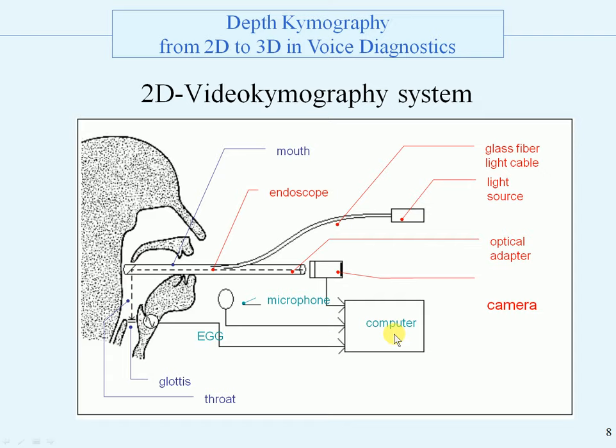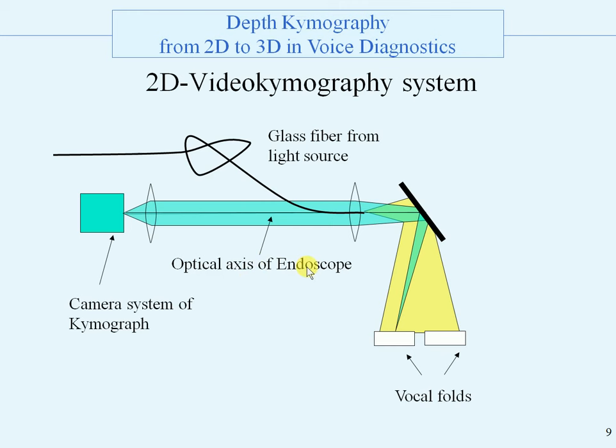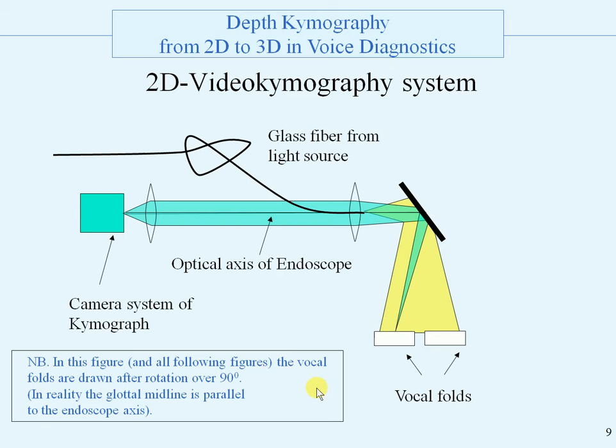The optical system of the videokymograph consists of the vocal folds as the target, the glass fiber from the light source, the camera system of the kymograph, and the optical axis of the endoscope. Please note: in this figure and all following figures, the vocal folds are drawn after rotation over 90 degrees because in reality the midline of the glottis is parallel to the endoscopic axis.